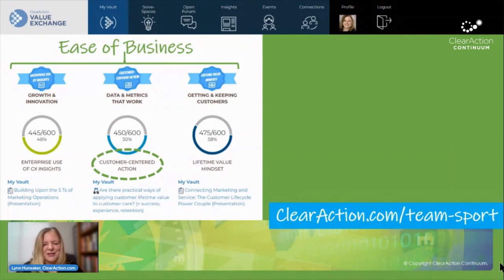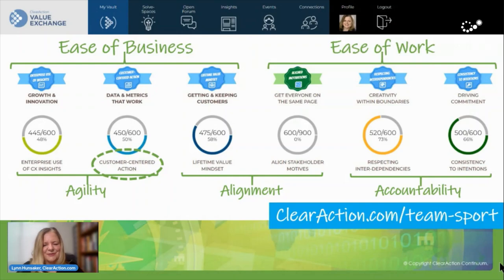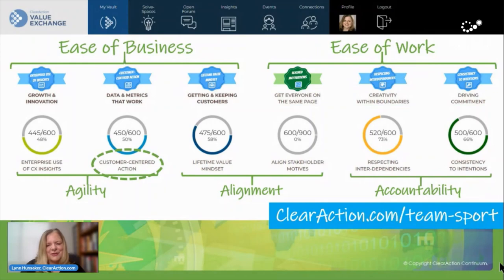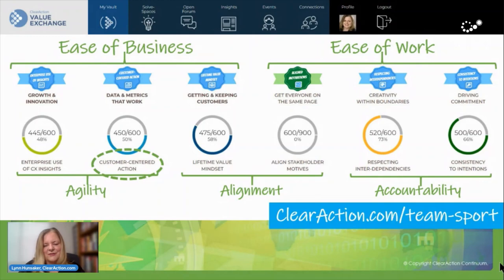We'll talk about that next week. Here we have the ease of work criteria — getting everyone on the same page, respecting interdependencies, and driving commitment. The things on the far right are accountability factors, the things in the middle are alignment factors, and the things on the left are agility factors. I welcome you to join us in the value exchange so you can build these competencies in your customer experience team, your marketing team, your employee experience team, and so on — because these are the skills we need in the 2020s to cope with the quickly evolving expectations and situations we find ourselves in the marketplace today.